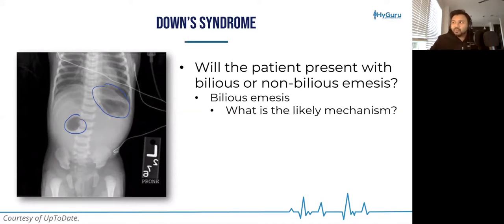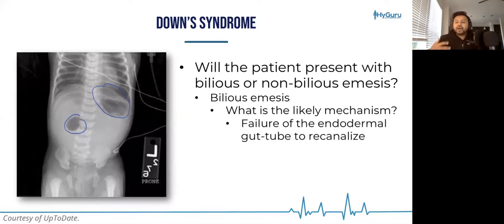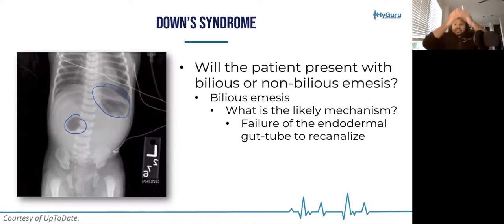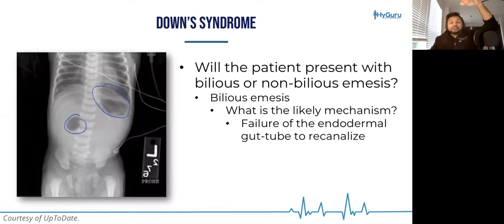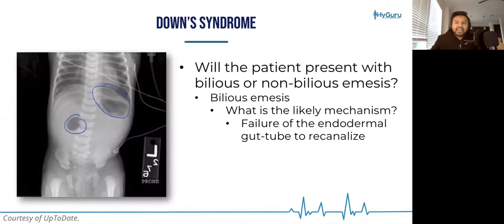What is the likely mechanism of duodenal atresia? It is the failure of the endodermal gut tube to recanalize. You start with a cylindrical tube, and canalization means making it a hollow cylinder. If that process is messed up, you can have duodenal atresia — the duodenum doesn't develop properly.